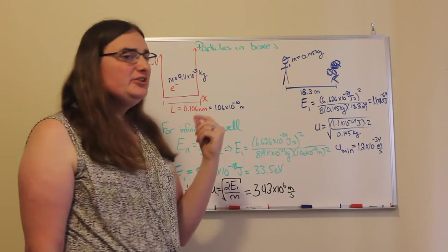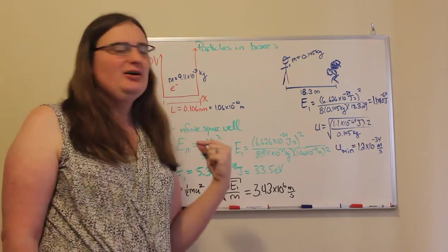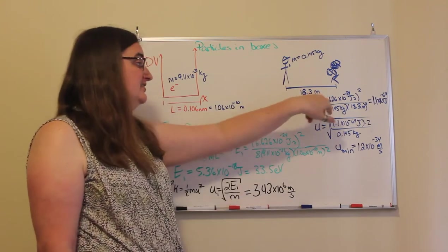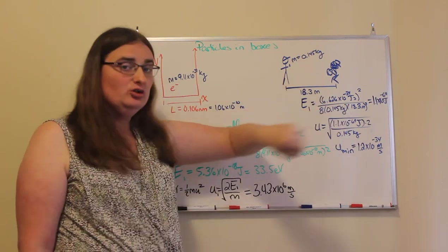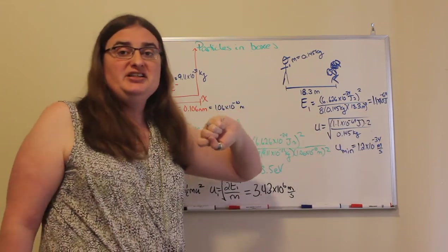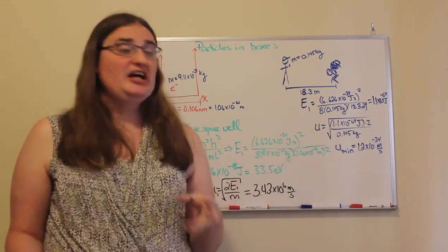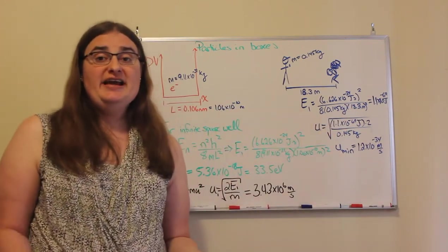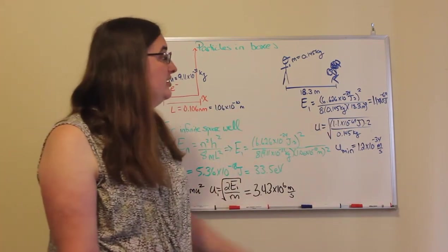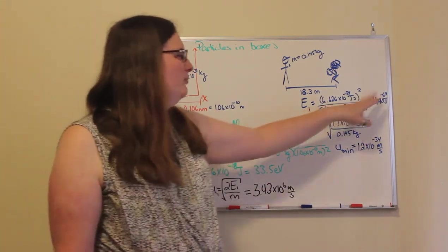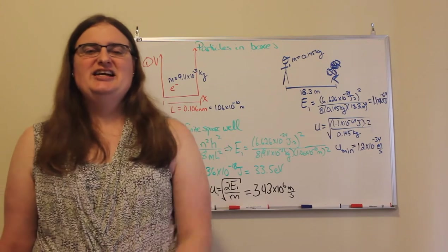So the lowest possible energy that baseball can have, according to quantum mechanics, is still Planck's constant squared divided by eight times our particle mass, 0.145 kilograms, divided by the separation distance where that ball is confined to, squared. So if the pitcher and catcher serve as infinite walls, then that baseball has a minimum energy of 1.1 times 10 to the negative 69 joules.